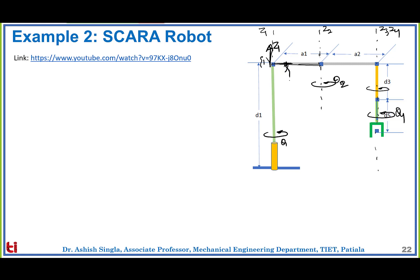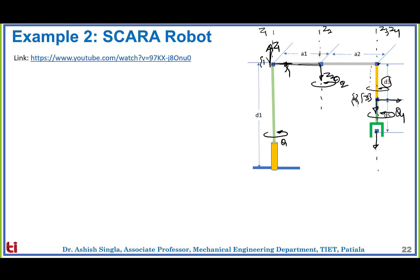Since it's an assembly robot, the Z2 direction is downwards. Z3 and Z4 directions are also downwards because it has to perform assembly operations. The location of Z2 is determined from the common perpendicular between Z2 and Z3. Since this is a prismatic joint, frame 3 moves up and down as D3 varies. Frame 4 is also attached at the same position because there is a roll axis about the same line. Z3, Z4, and Z5 are all marked downwards.